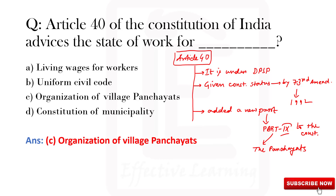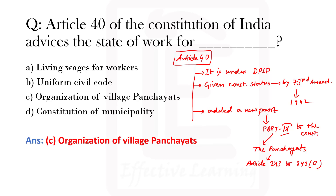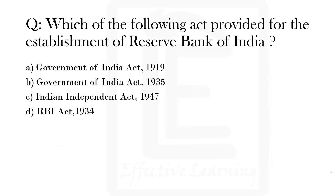Part 9 is named 'The Panchayats.' So Article 40 is all about the panchayats. This falls under Articles 243 to 243O. Let's move to the next question.